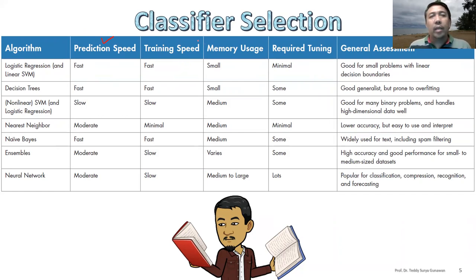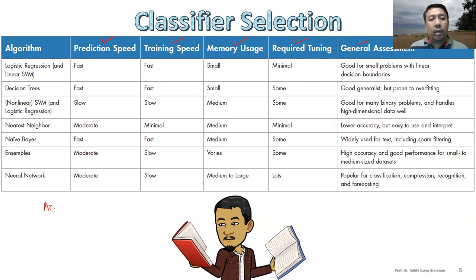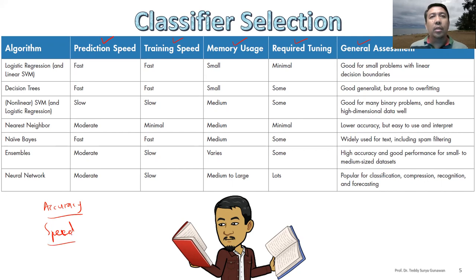There is a tradeoff between training speed, memory usage, and required tuning. The general assessment depends on your situation and your problem. Basically you are targeting either accuracy or speed — you cannot have both. Speed also includes the number of parameters you want to train. You can select algorithms based on whether you want to focus mostly on accuracy or mostly on speed.